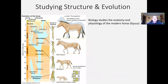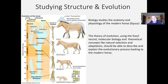We are looking at the structure and evolution of the universe. I'd like to make an analogy to the theory of evolution, where in modern biology we can study the structure of the modern horse — the genus Equus — and learn all about its anatomy and physiology. But the theory of evolution, by looking through the fossil record and using theories like molecular biology, natural selection, and adaptation, should be able to explain and describe the evolution up to the modern horse.